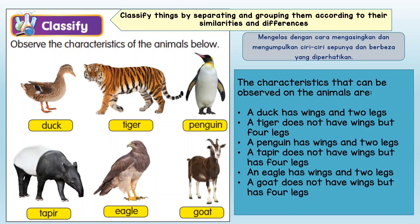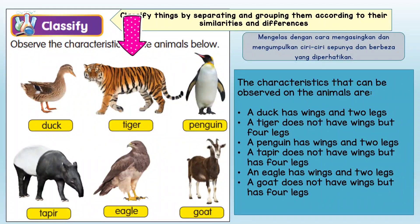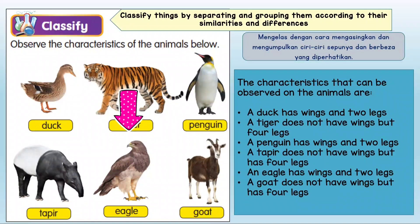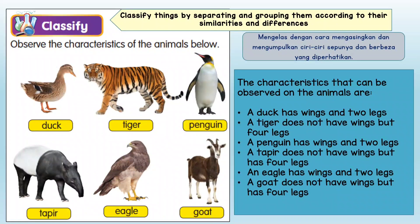So, the characteristics that can be observed on the animals are: a duck has wings and two legs; a tiger does not have wings but has four legs; a penguin has wings and two legs; a dog does not have wings but has four legs.